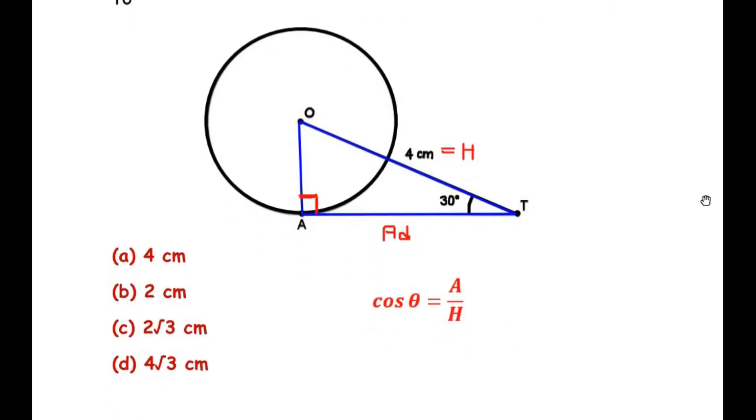Now theta is going to be angle 30. So let me write here cos of angle 30 degree is equal to the adjacent side, which is AT whose length we need to find out. So AT over the hypotenuse which is 4 cm.